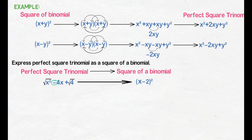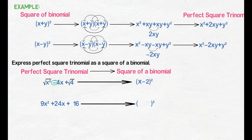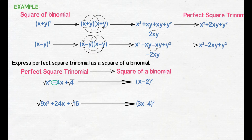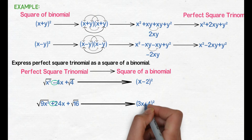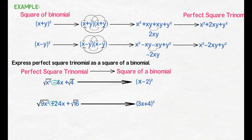Next, express naman natin ang 9x square plus 24x plus 16 as square of a binomial. Para makuha ang unang term ng binomial factor, i-square root lang natin ang quadratic term — square root of 9x square is 3x. Para makuha naman ang second term, i-square root natin ang constant term — square root of 16 is 4. Gagayahin lang natin ang sign ng linear term; positive ang sign kaya plus sign ang ilalagay. So we have quantity 3x plus 4 raised to 2.